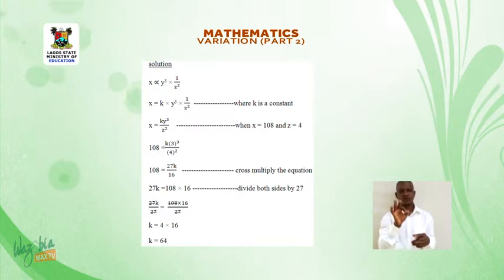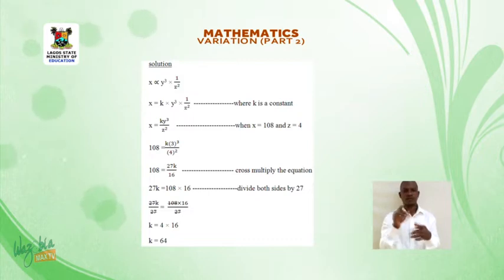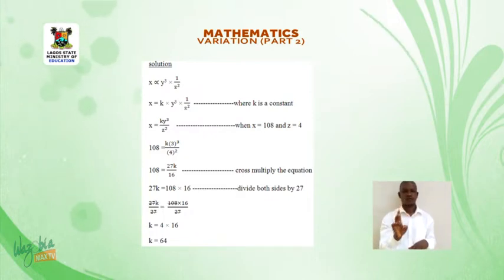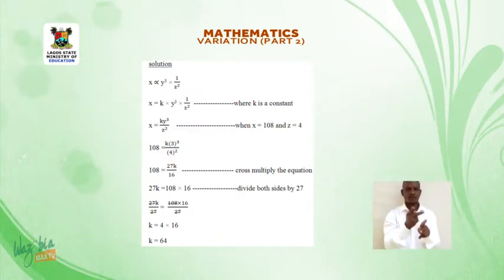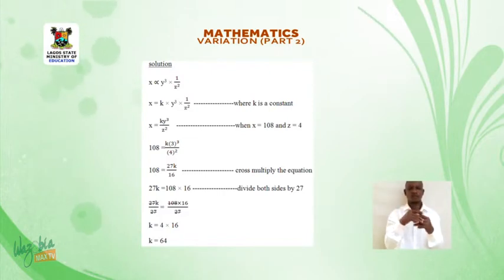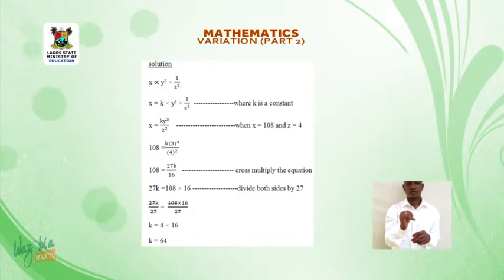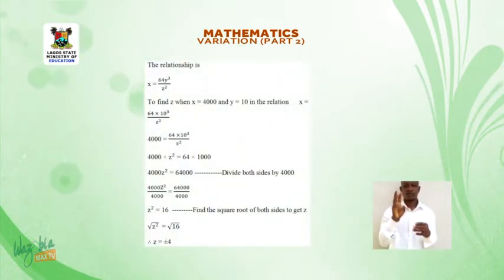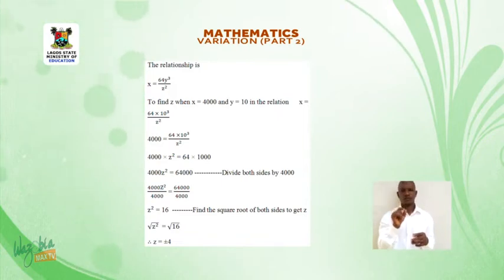Cross multiplying the equation: 27K is equal to 108 times 16. Dividing both sides by 27: 27K over 27 is equal to 108 times 16 over 27. K is equal to 4 times 16. Therefore, K is equal to 64. The relationship is X is equal to 64Y cubed over Z squared.